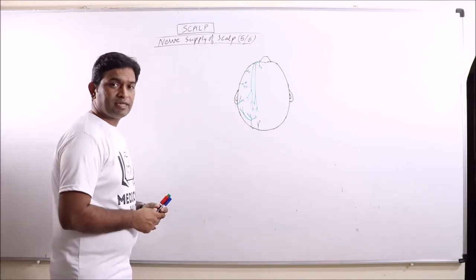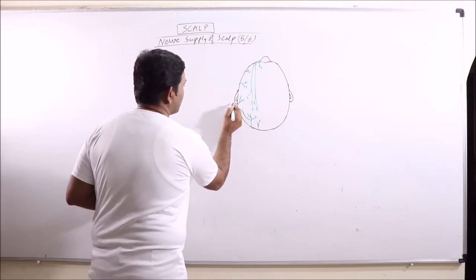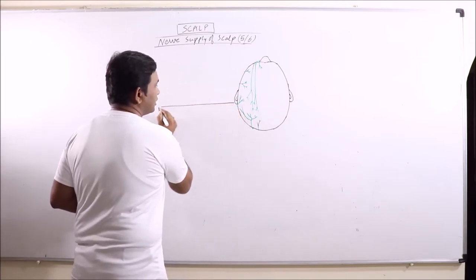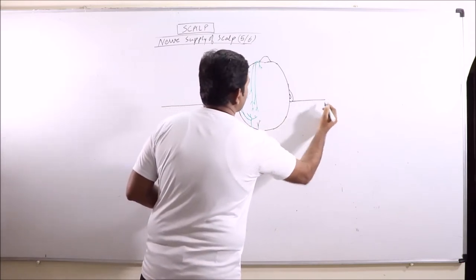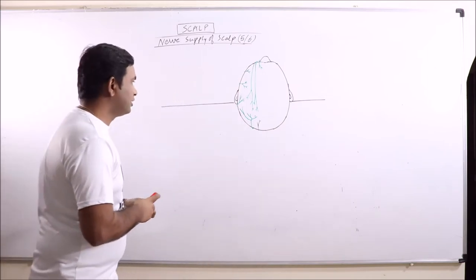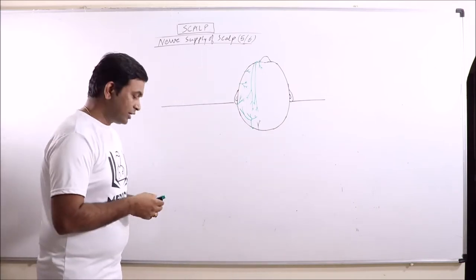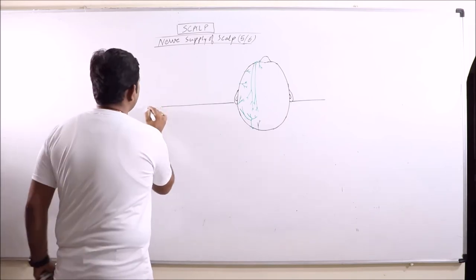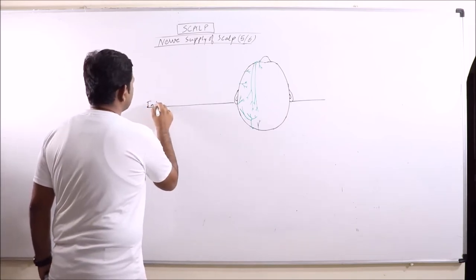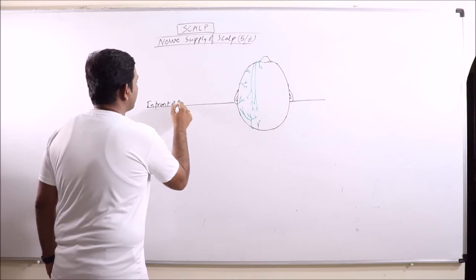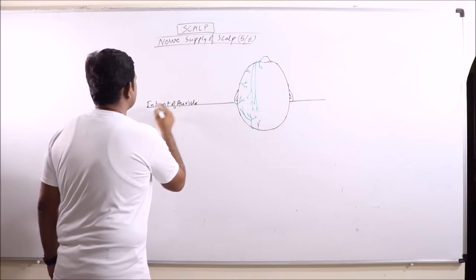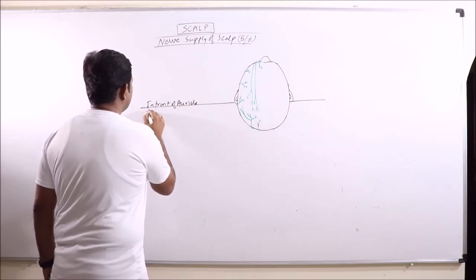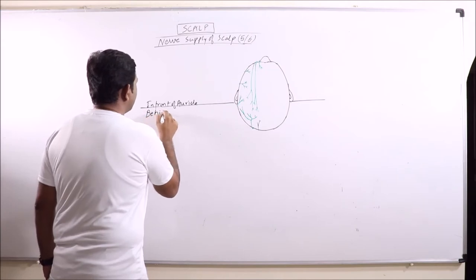As we have discussed in the previous lecture, the nerve supply will also be divided into anterior to auricle and behind the auricle, that is in front of auricle and behind the auricle.